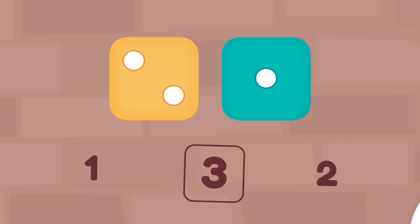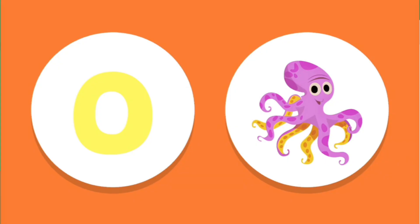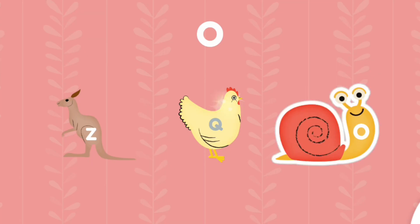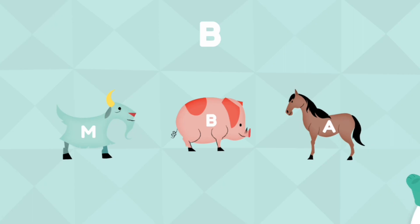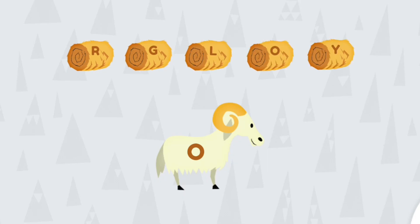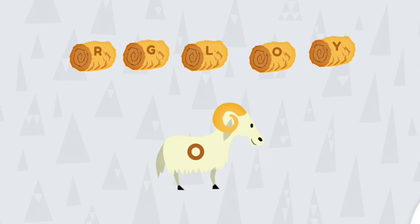The uppercase letter O. The letter O makes the aw sound like in the word octopus. Which one has the letter O? Tap it. O. Nice! Which one has the letter B? Tap it. B. Nice work! Give the ram the hay with the letter O.